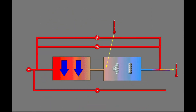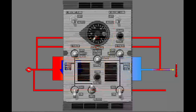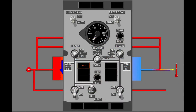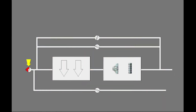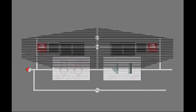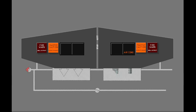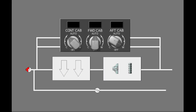If the temperature in the pack is too high, or if the pack output temperature is high, the pack light illuminates and the related pack valve closes. Reset the master caution system. To decrease the load on the pack, select all the temperature selectors to a warmer temperature.